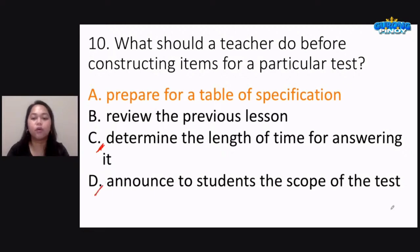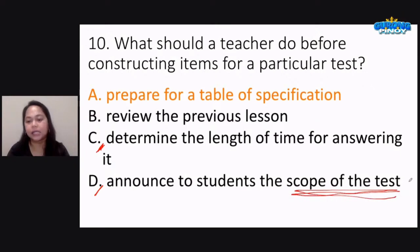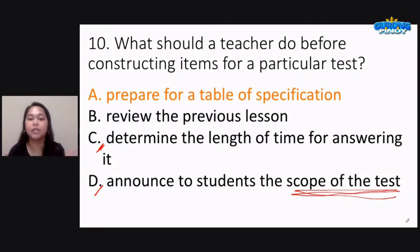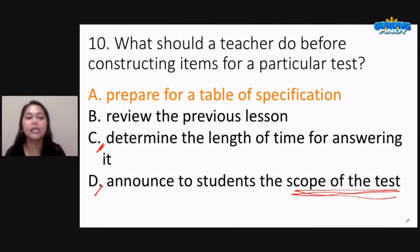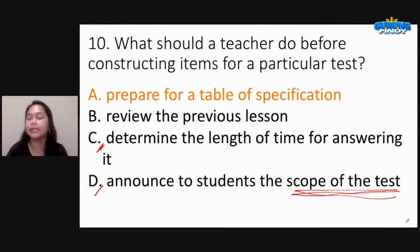Announcing to students the scope of the test — of course, you already know you have a test and you know the items. That's when you tell students: there will be 25 multiple-choice items, 10 computation items, and so on. This means you've already constructed the test. So the correct answer for number 10 is table of specification — that's letter A.